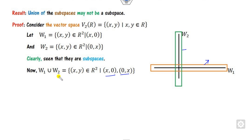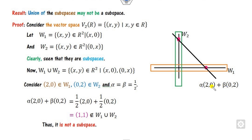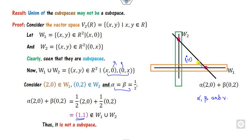Can this union form a subspace? Take two elements: say (2, 0) and (0, 2). If you take their linear combination with alpha = beta = 1, you get (2, 2), or with alpha = beta = 1/2 you get (1, 1). Can (1, 1) lie in the union? No, because the union consists only of points whose second component is 0 or whose first component is 0. But (1, 1) does not satisfy either condition, so it does not belong to the union. Therefore the union is not a subspace.